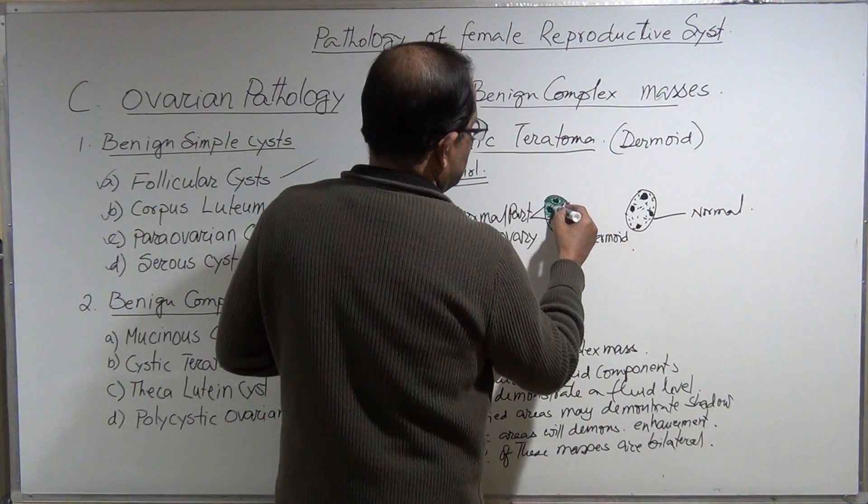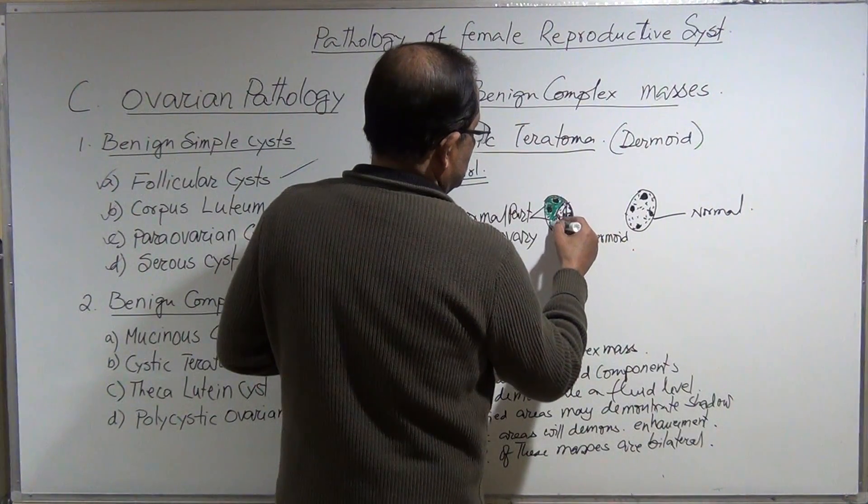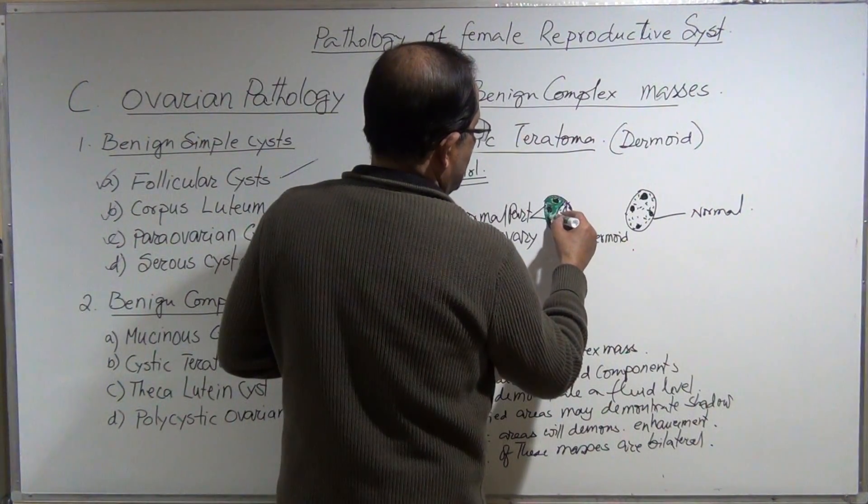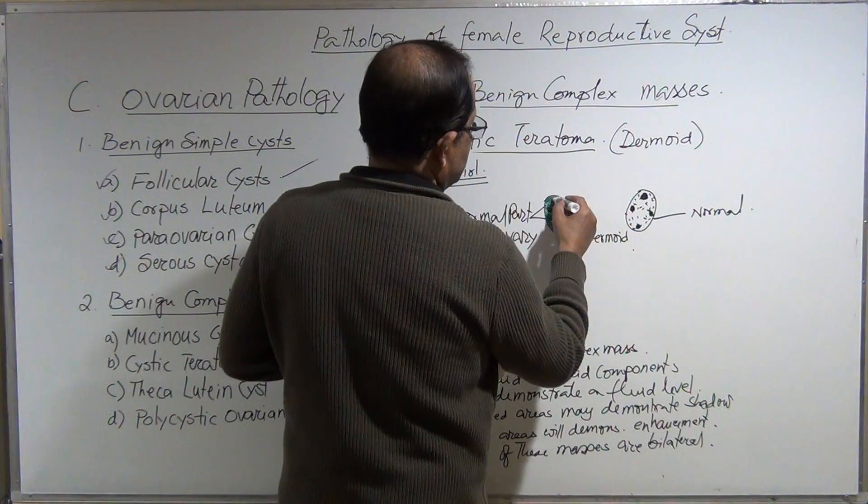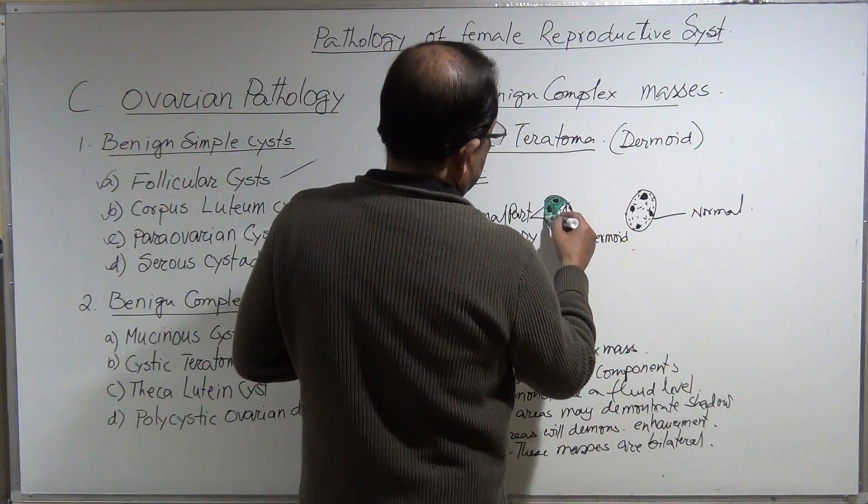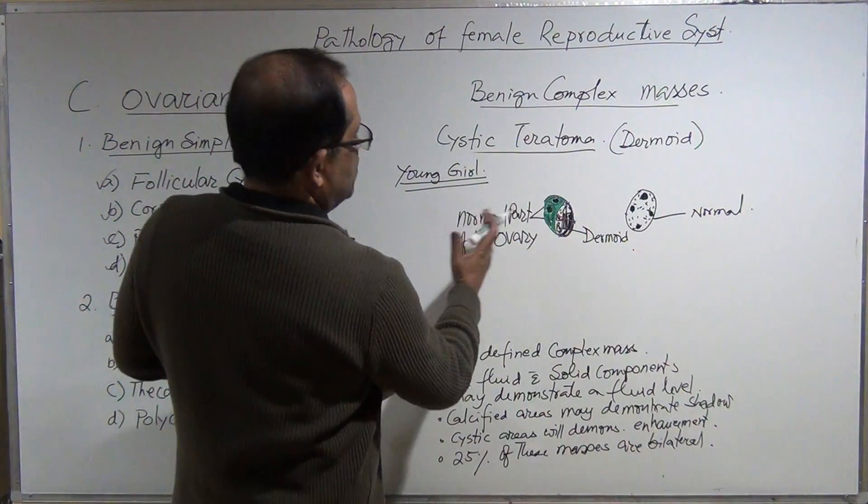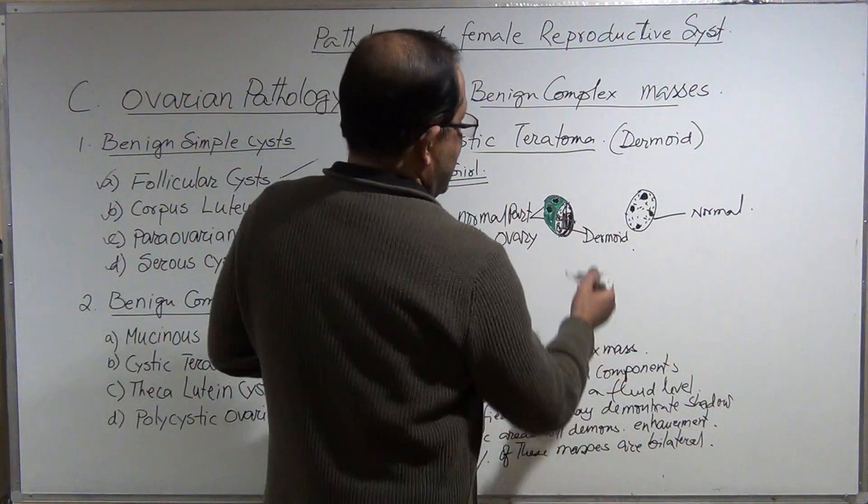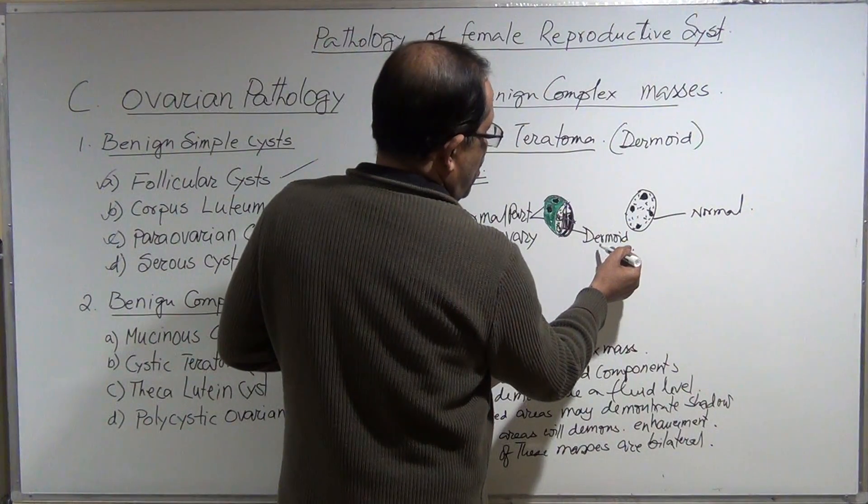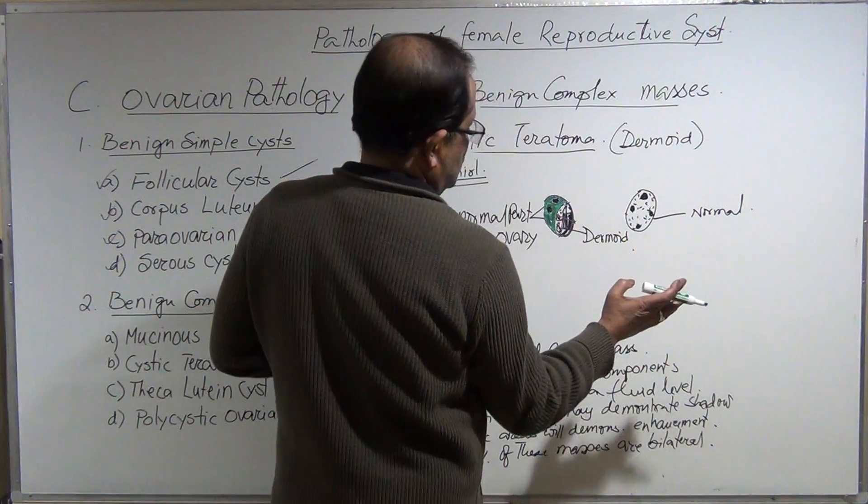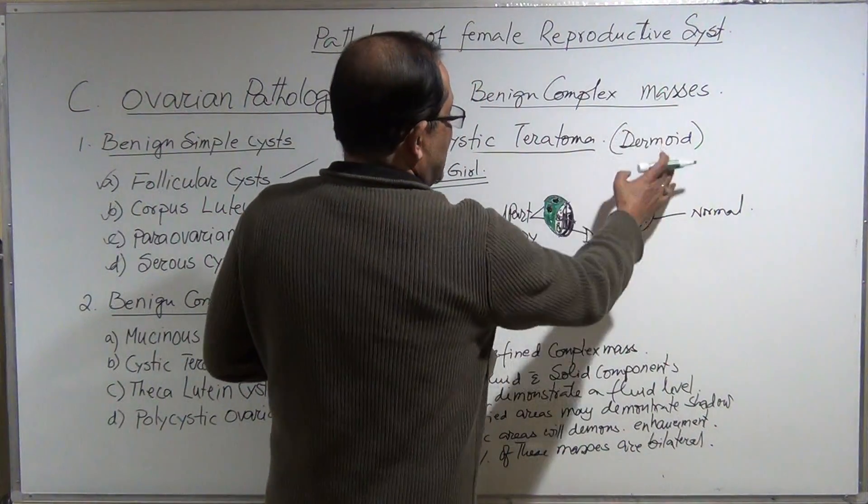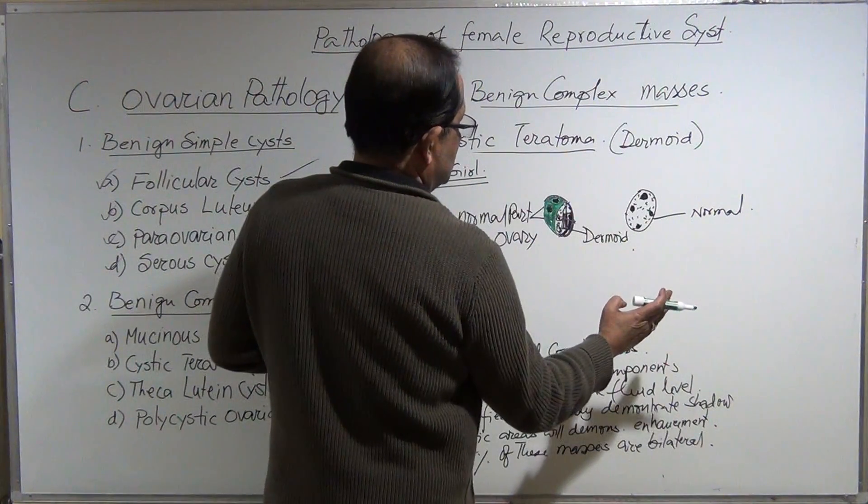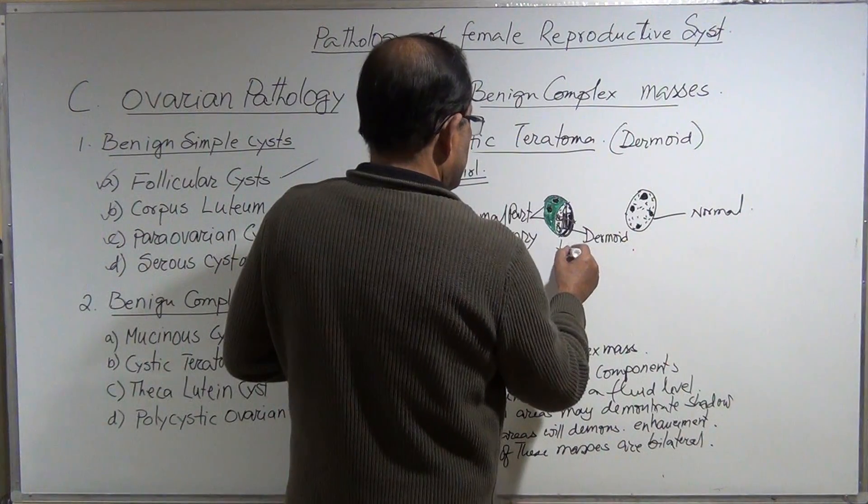Do you think they will take the whole ovary out or do very selective surgery? Very selective surgery. They will keep the normal part of the ovary intact and take the dermoid out—take the teratoma out.